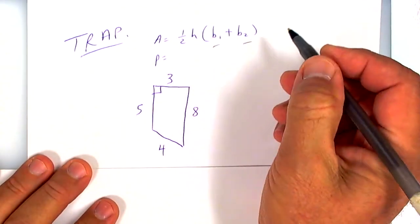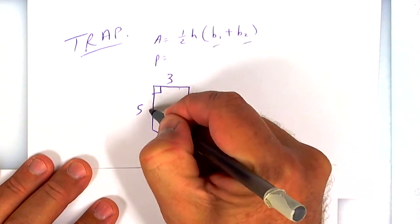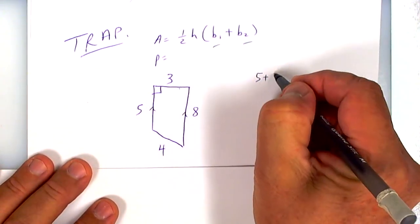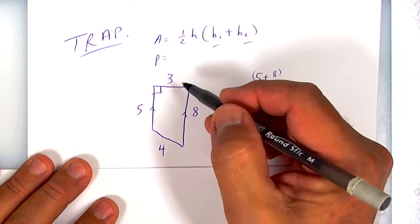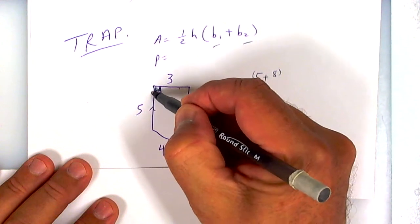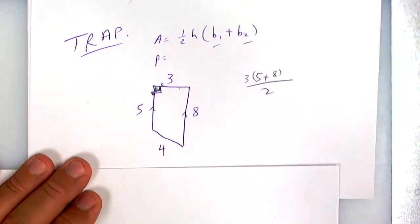The bases are the ones that are parallel. Some kids say top and bottom, but not in this case. It would have to be the 5 and the 8, so the bases are parallel: 5 plus 8. The height of this is from base to base. Remember I said color the box. It touches one base and the height is actually 3.